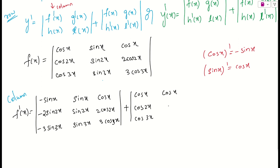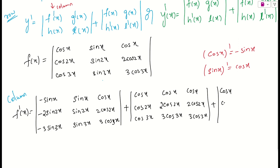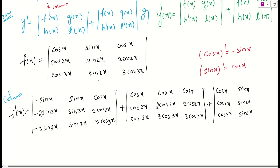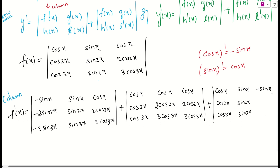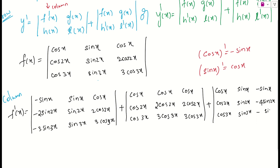The third term has the first two columns as they are (cos x, cos 2x, cos 3x and sin x, sin 2x, sin 3x), while we differentiate the third column. The derivative of cos x is −sin x, cos 2x gives −sin 2x times 2 (so −4·sin 2x with the outside coefficient 2), and cos 3x gives −sin 3x times 3, and with the outside 3, that gives −9·sin 3x.